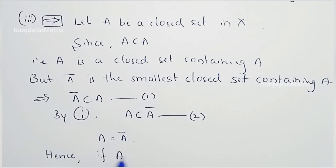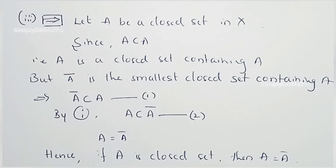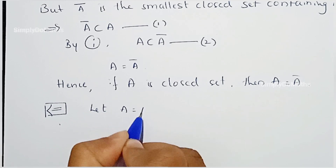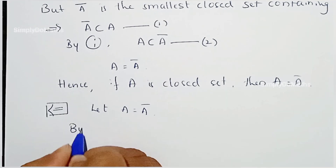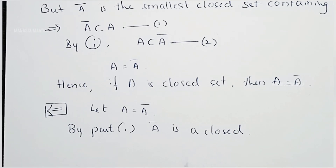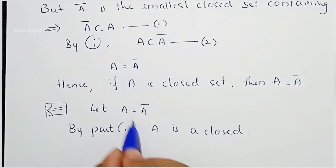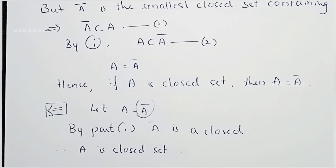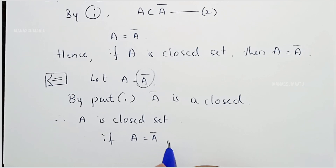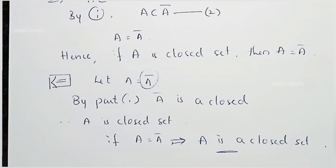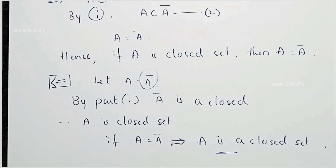Hence, if A is a closed set then A equals Ā. For the converse, the hypothesis is A equals Ā. By part two, we know Ā is a closed set in X. Therefore, since A equals Ā and Ā is closed, A is a closed set. So, if A equals Ā then A is closed. This completes the proof of the theorem. I will come with one more property in the next video.